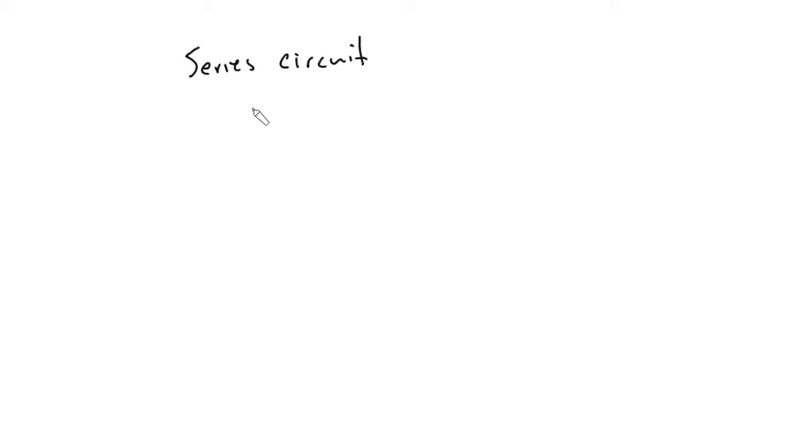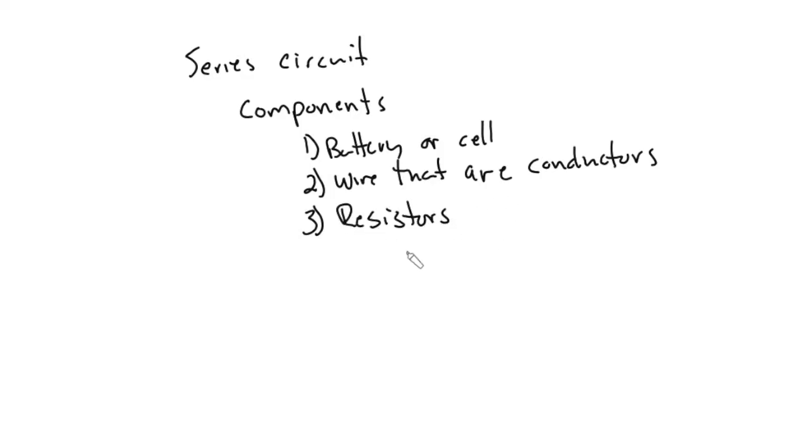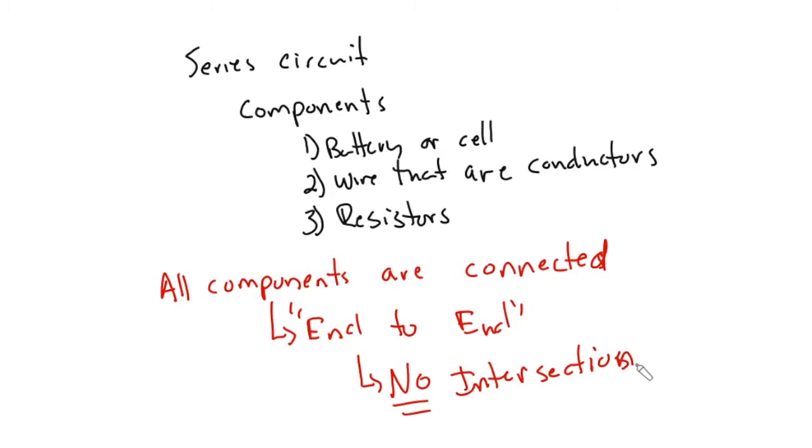For a series circuit, we are going to see the components. There's going to be a battery or cell. There has to be wires that are conductors, meaning electrons can flow. And then there will be some resistors. And there could be an infinite amount. In this course, generally, we'll do between one and three. But here's the thing that makes this a series circuit. All components are connected end to end, meaning there are no intersections. There's going to be no decision-making for current at all. Let's draw one right now. I'm going to draw a battery, then this come up. It is going to hit a resistor, another resistor, and maybe a third resistor. And that is a series circuit.